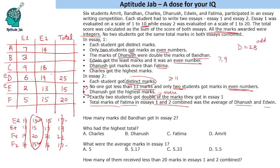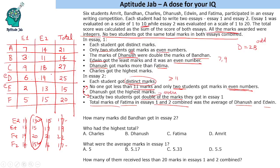Now we need an odd number for Bandhan in SA2; it can be 11 or 17 since 13 and 15 are already used. If Bandhan gets 11, his total is 14; if 17, his total is 20. But we are given that no two students got the same total marks combined, and Fatima's total is already 20, so Bandhan must get 11 in SA2 with a total of 14. The table is now complete.